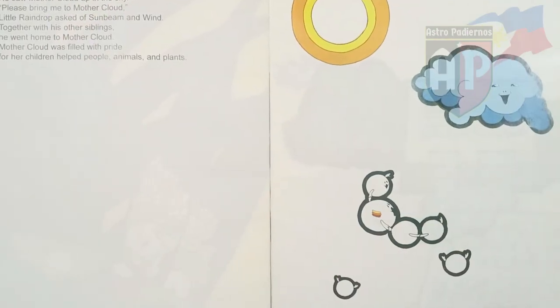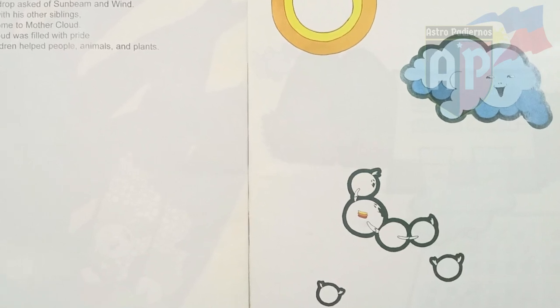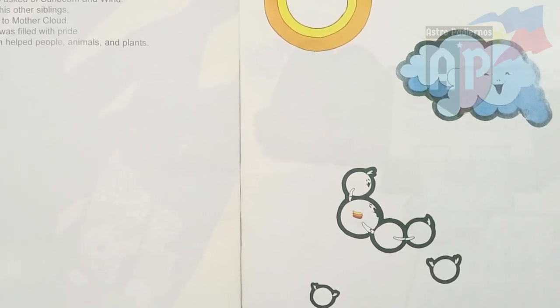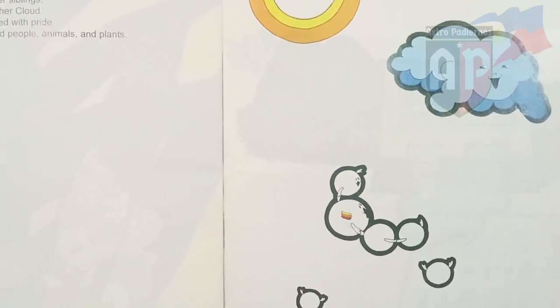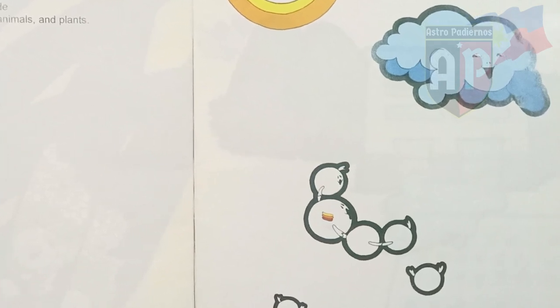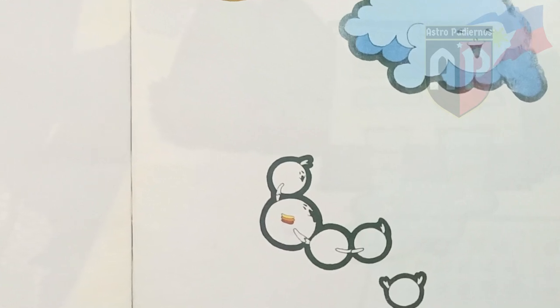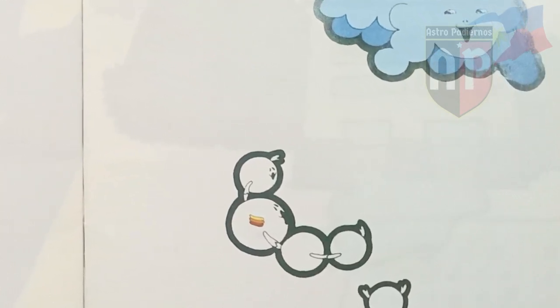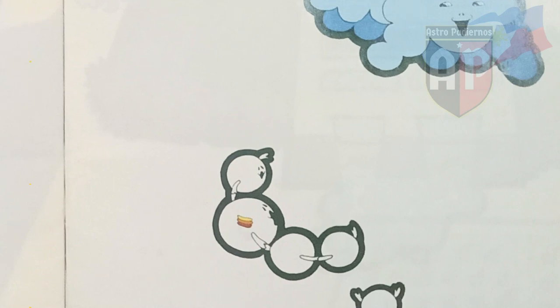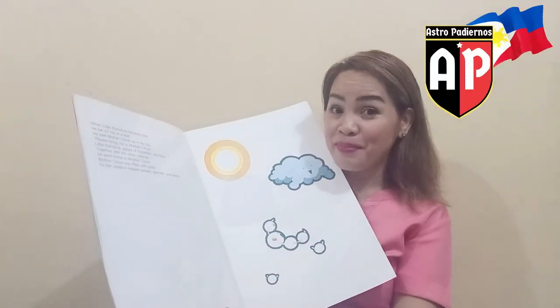When Little Raindrop became tired, he sat on top of a leaf. He saw Mother Cloud up in the sky. "Please bring me to Mother Cloud," Little Raindrop asked of Sunbeam and Wind. Together with his other siblings, he went home to Mother Cloud. Mother Cloud was filled with pride, for her children had helped people, animals, and plants.